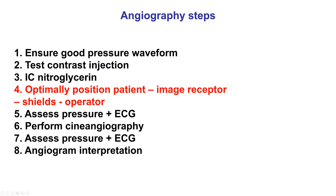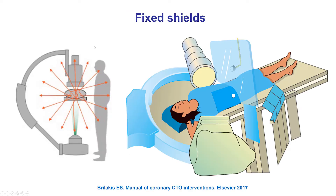Step four is to optimally position the patient, as well as the image receptor, the shields, and the operator, in order first to optimize the imaging, and second to minimize scatter radiation to the operators. The table should be as high as possible. The image receptor should be as close as possible to the patient. Shields should be placed between the patient and the operator. And the operator should be moved as far back as possible, since scatter radiation intensity is proportional to the square of the distance between the scatter point and the operator.